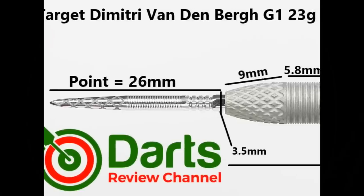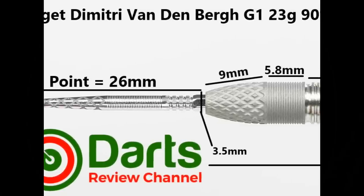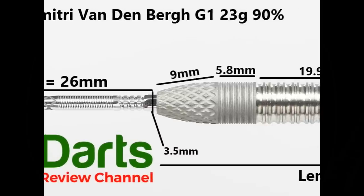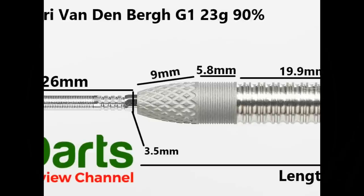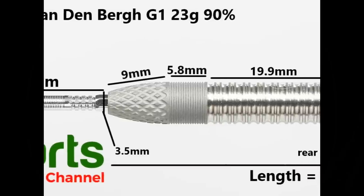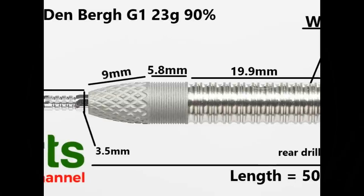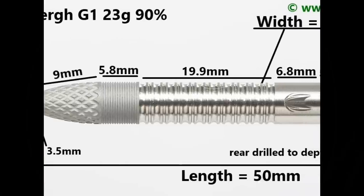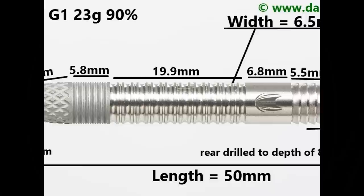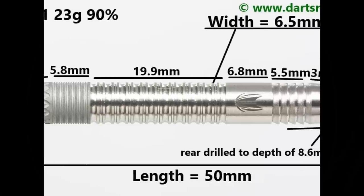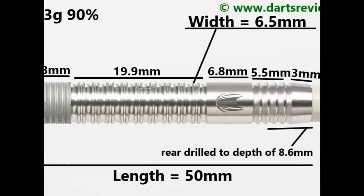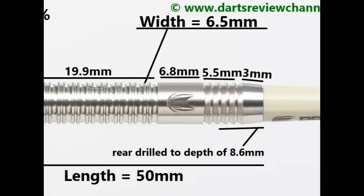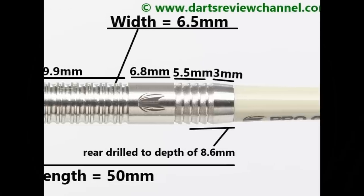So the darts are fitted with the Swiss DX points, 26mm. You've got a tapered nose there with the nail grip, and that's all hand sandblasted. That's 9mm. Then you've got a very fine micro grip. That's 5.8mm. Then you've got this double-thin ring grip. That's 19.9mm. Then a smooth section with the target logo, 6.8mm. A shark grip section, that's 5.5mm. A smooth tip on the end of 3mm. Length is 50mm, and the width is 6.5mm.